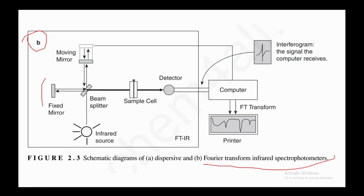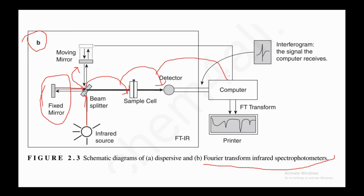In the FTIR instrument, we have the irradiation source, a fixed mirror, and a moving mirror. The light passes through and goes into the sample, then into the detector, then into the computer which performs the Fourier transform and gives you the spectrum. The signal the computer sees at this stage is called the infrared interferogram. That is the FTIR spectrophotometer instrumentation.